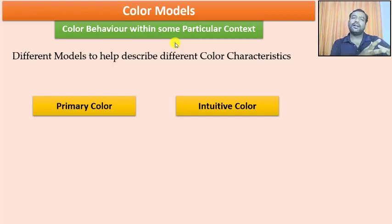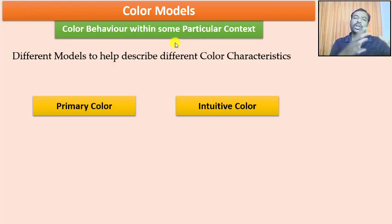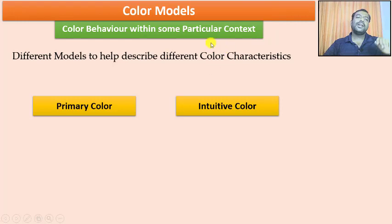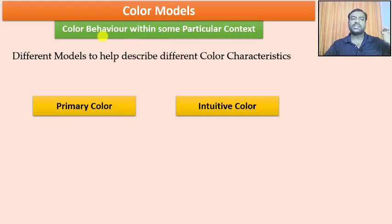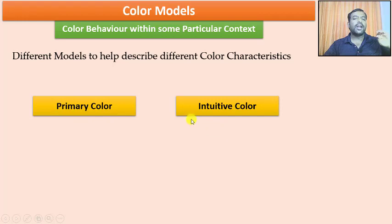The same color, when we talk about it in computer graphics programming, can be described by different models. Different color models appear depending upon the color behavior within a particular context. Different models help describe different color characteristics. We are going to have primary color models and intuitive color models.